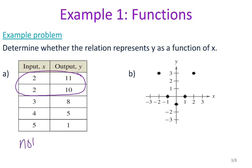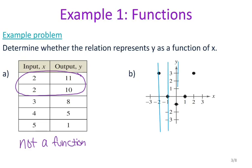So for letter a, this is not a function. For letter b, anytime you're given a graph you should use something called a vertical line test. A vertical line test uses vertical lines — I'm going to draw vertical lines that go through my points, and I want to make sure that my vertical lines do not cross more than one point. If I only have one point on each vertical line, then yes, it represents a function.